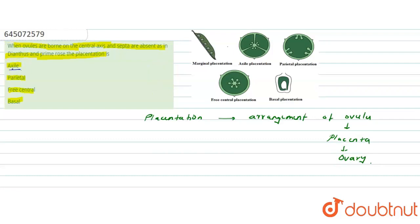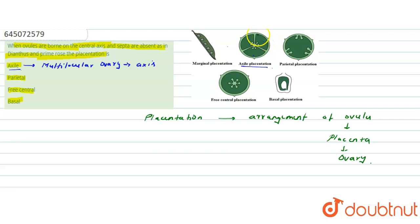The first option is axile placentation. Axile placentation occurs only in a multilocular ovary where ovules are attached at the axis of the septa. Here, septa are present inside the inner wall, so this option is incorrect because the question specifies that septa are absent.